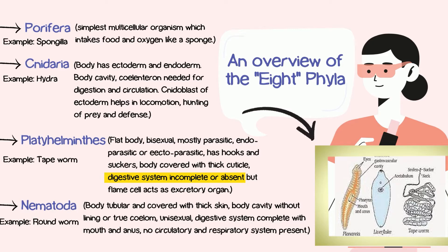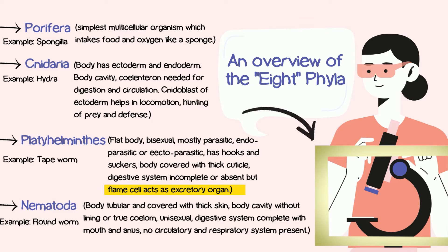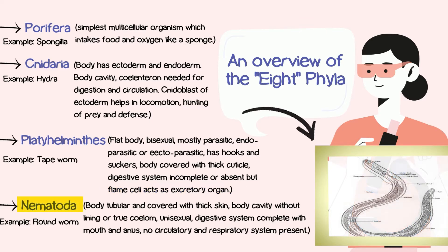The digestive system is incomplete or absent. They have flame cells, which are specialized cells that act as the excretory organ. So the flame cell is the excretory organ, not a digestive structure.